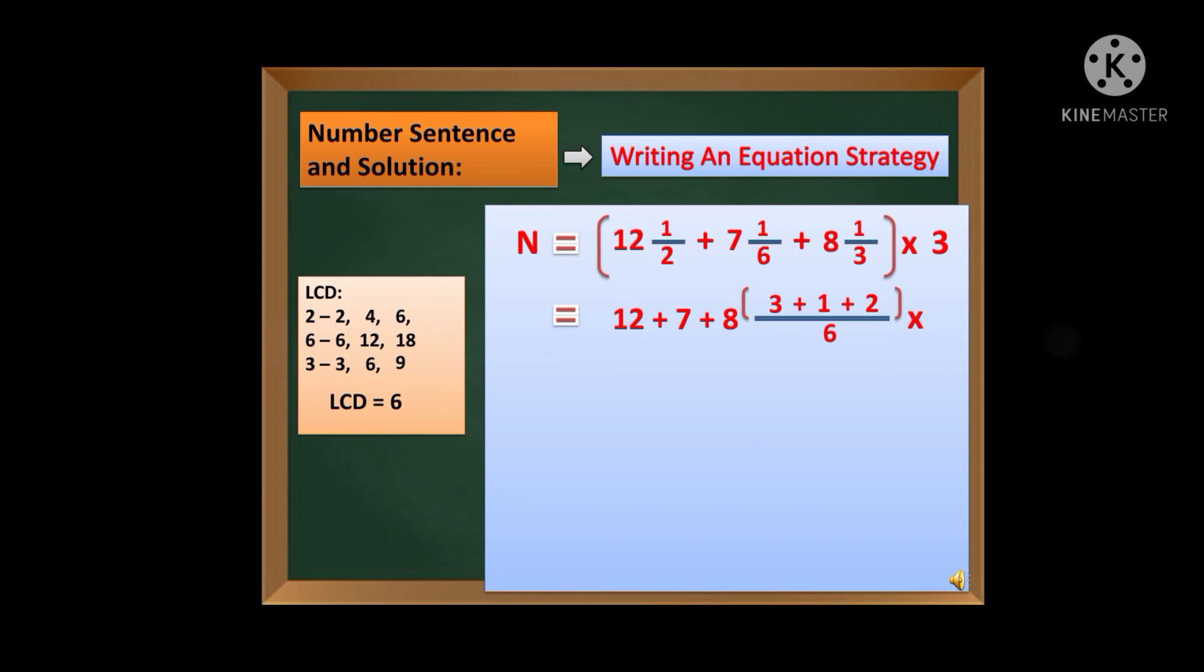Ngayon, i-add naman natin ang mga whole number, which is 27 po ang sagot, plus the numerators: 3 plus 1 plus 2 is equal to 6, then copy the denominator which is 6, times 3. Okay, ngayon kung mapapansin natin si 6 sixths, pariyo pang denominator at kanyang numerator. Again, kapag pariyo ang numerator at denominator, that is equal to 1. Okay, kaya 27 plus 1. Okay, so dating 27 and 6 sixths is equal to 27 plus 1 times 3. So 27 plus 1, this will give us 28 times 3. Okay, so 28 times 3 is equal to 84.